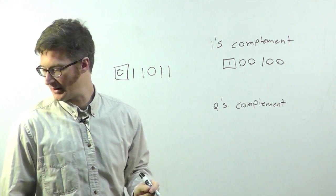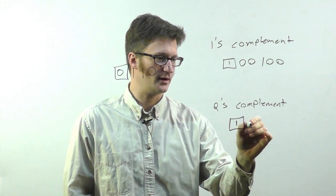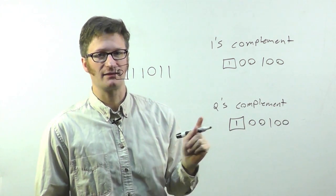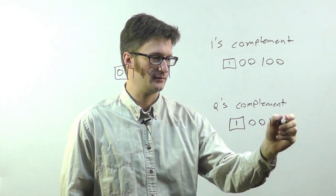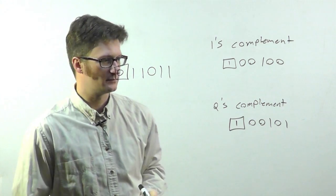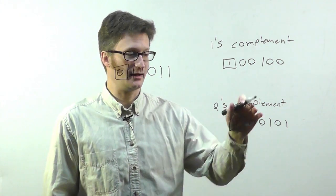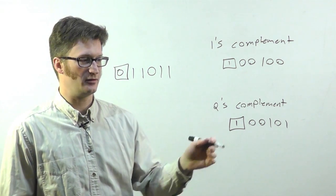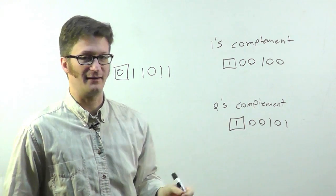For twos complement, you're doing the same thing. So we have one, zero, zero, one, zero, zero. But you need to add one to that value. And then you can just go ahead and add, just like you would normally, to perform a subtraction. So you'd be subtracting this value by adding its negative.